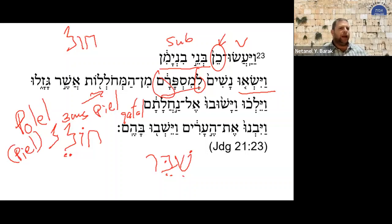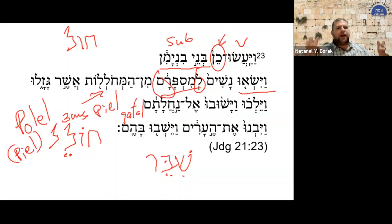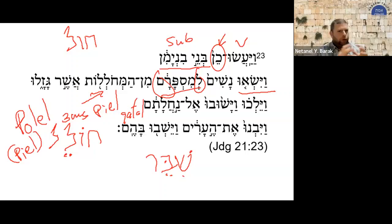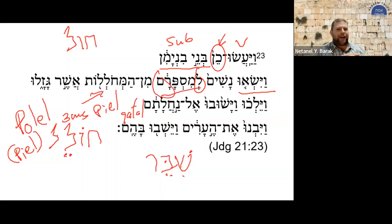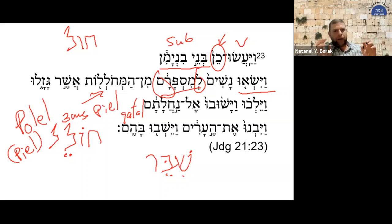There are two ways to look at it. We can say it's a different binyan, or we can say it is the pi'el binyan under certain cases. The distribution is essentially complementary. What do I mean by complementary distribution? Do you know Superman? Do you know the famous journalist Clark Kent? They have a complementary distribution — when you see the one, you don't see the other.